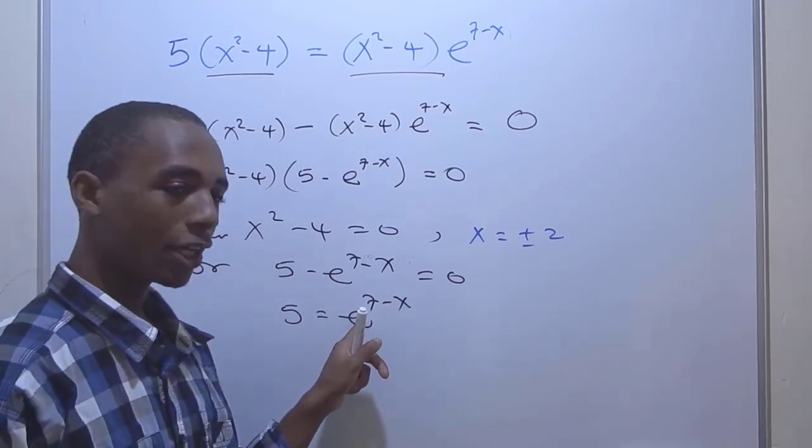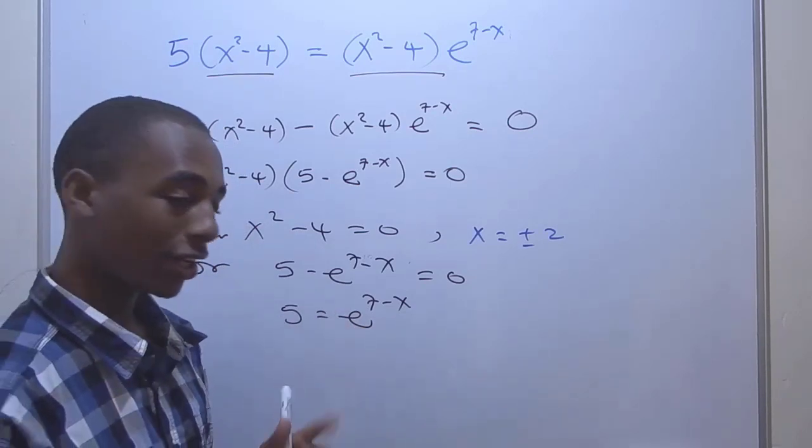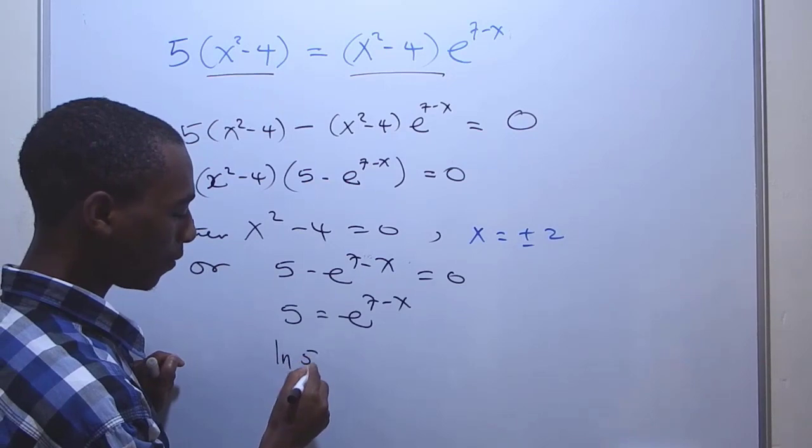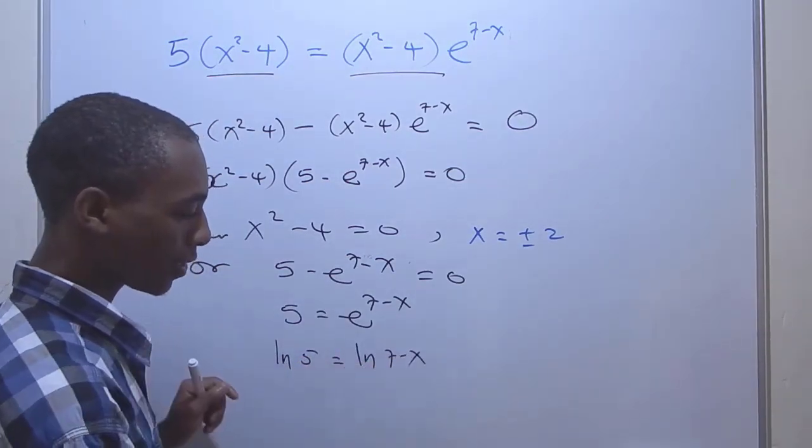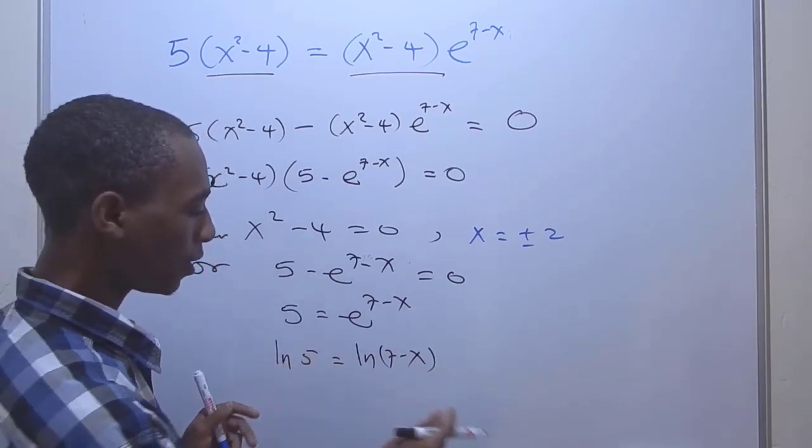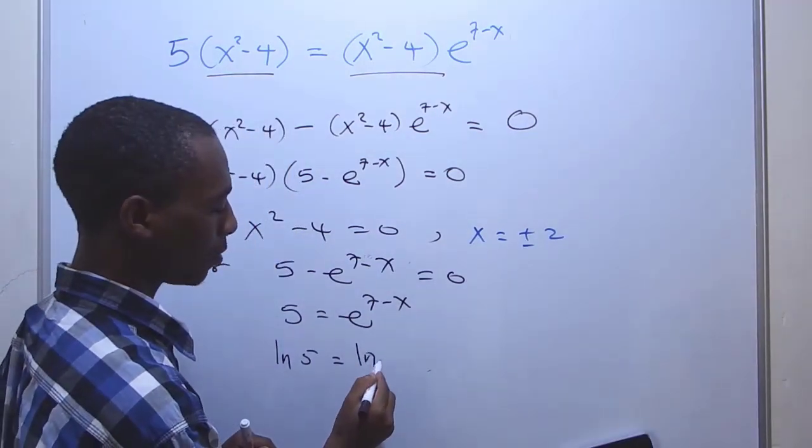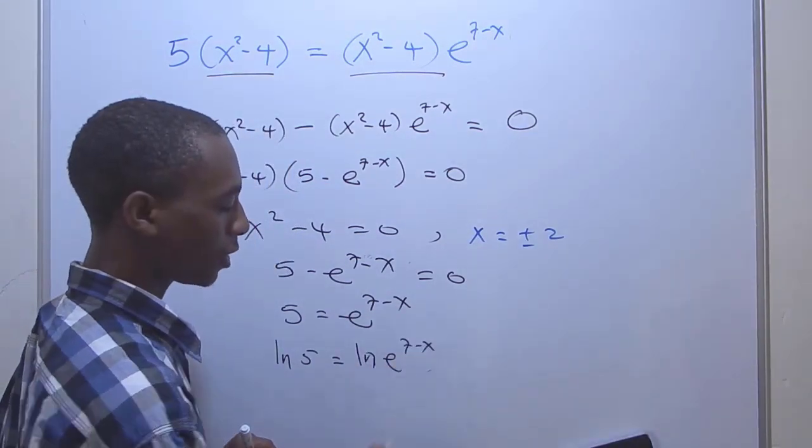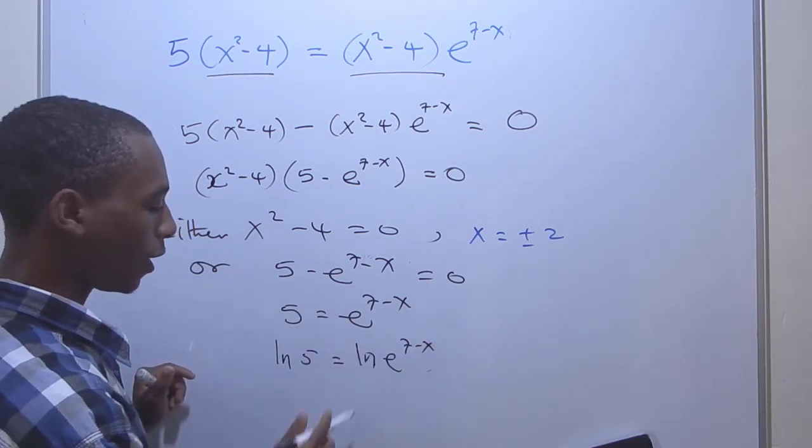And to get rid of the exponent, we have to introduce logs on both sides, specifically the natural log. So ln 5 = ln e^(7-x). If you're familiar with the laws of logarithms here - oops, this is actually exponent, e^(7-x).